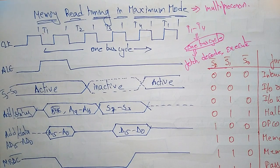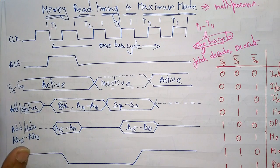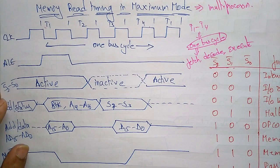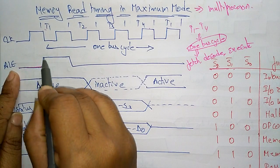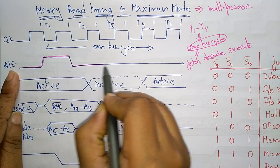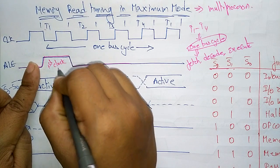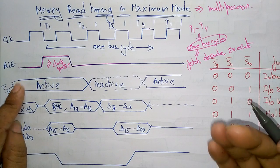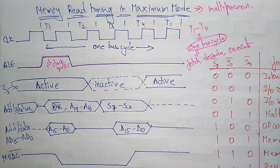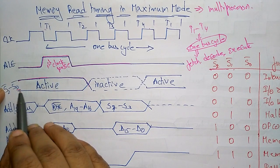Now let us see what operations are performed in each clock pulse for reading data. The processor has to read the data, so first the address latch enable is activated. During the first clock pulse, the address will be placed on the address bus. Address latch enable will be activated, meaning we have to read the data from the input/output or memory devices.